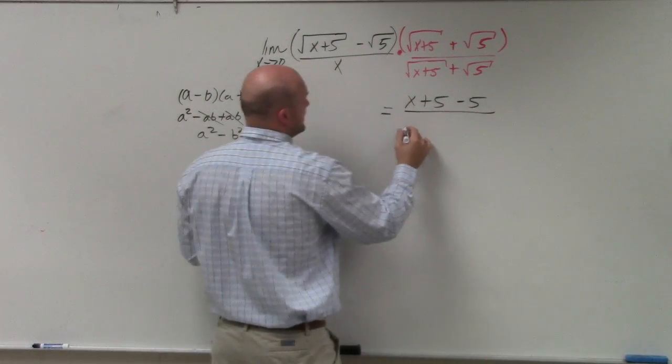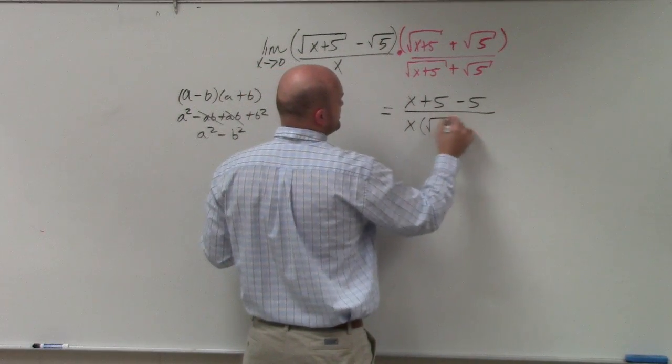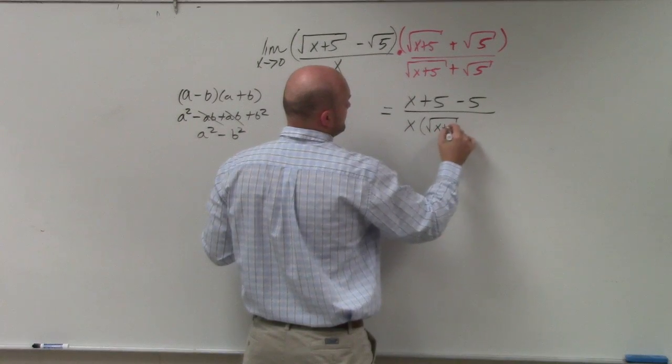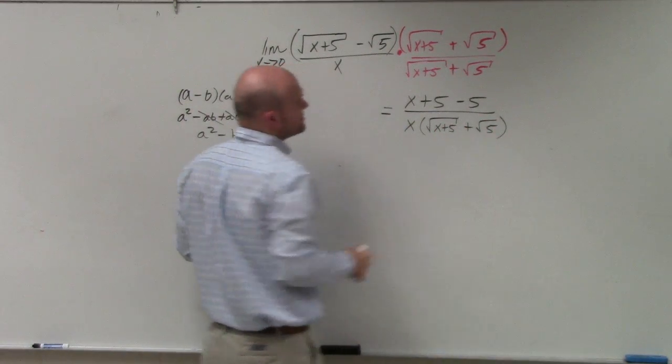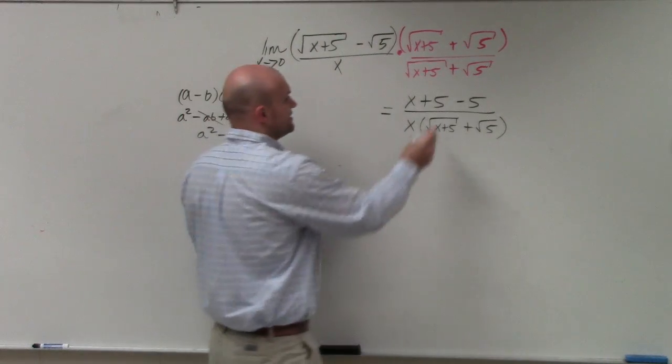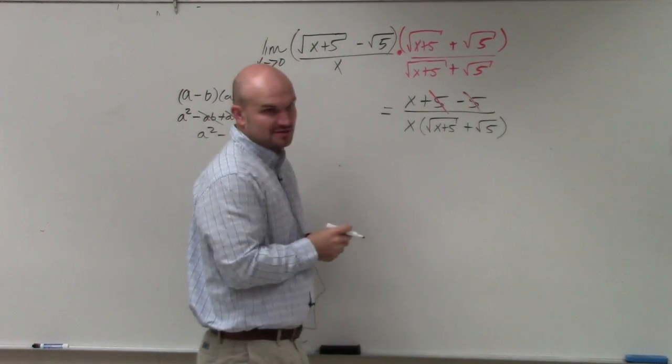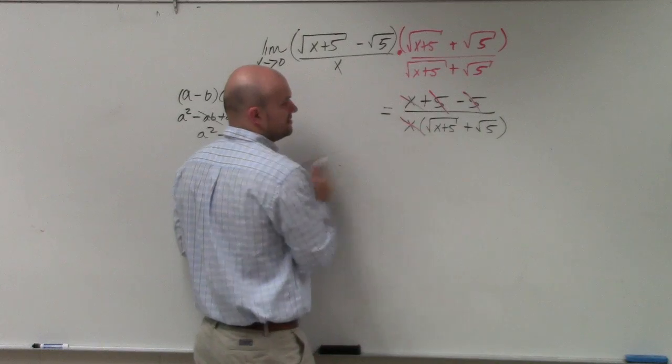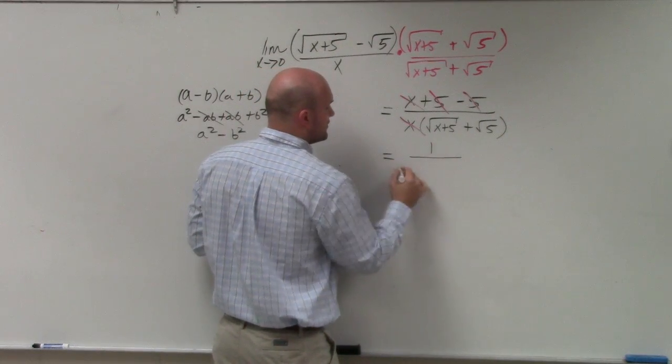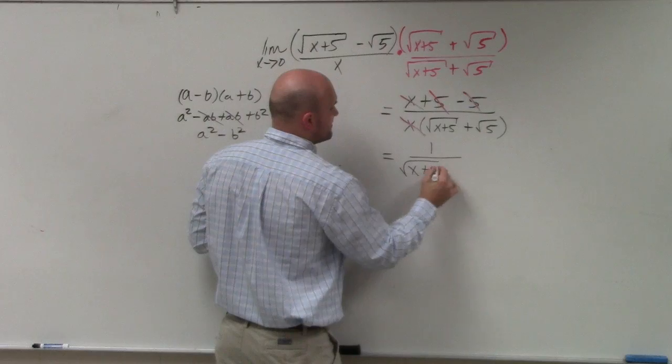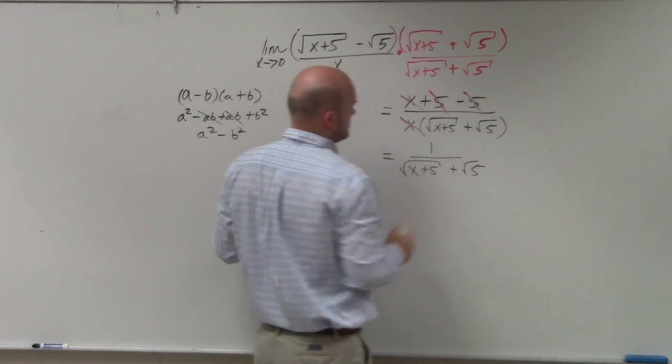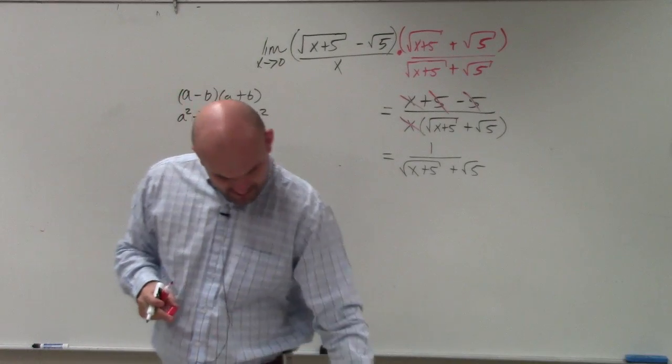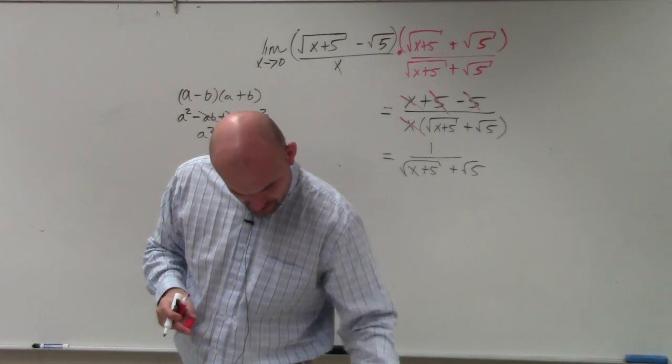And then over here, I'm not going to distribute this through. I'm just going to leave it just like this. Obviously, you guys can see that the 5's divide out, the x's divide out, which just leaves me with 1 over the square root of x plus 5 plus the square root of 5.